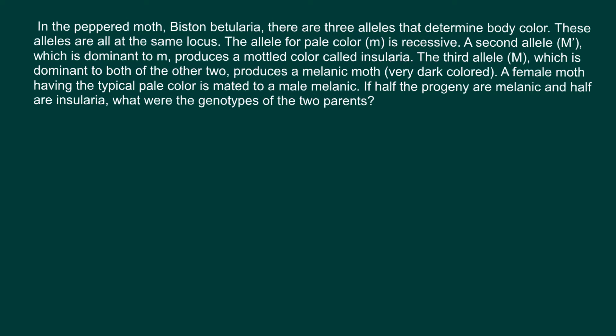In diploid organisms, chromosomes come in pairs, meaning the two homologous chromosomes share the same genetic makeup, though some genes can have mutations. So at the same locus, we may have different variants of the same gene. In simple Mendelian genetics we usually deal with only two alleles — dominant and recessive — but this time we have three alleles in the gene pool. Only two alleles can be present simultaneously in an individual, but across the whole species we may find three variants.